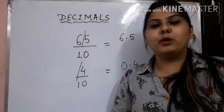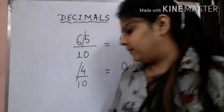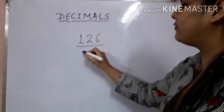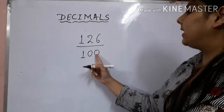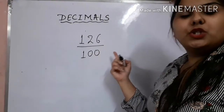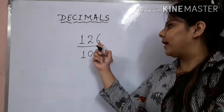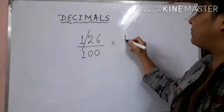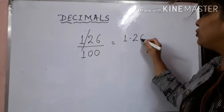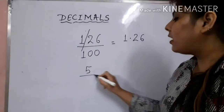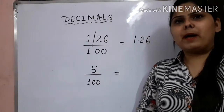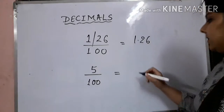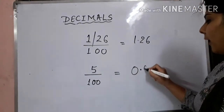Let us take some more examples with the denominator 100. If I am given 126 upon 100, the number of zeros is 2, so I count the 1s place and 10s place and put a slash in between — my answer would be 1.26. Now if I am given 5 upon 100, the decimal fraction representing it would be 0.05.